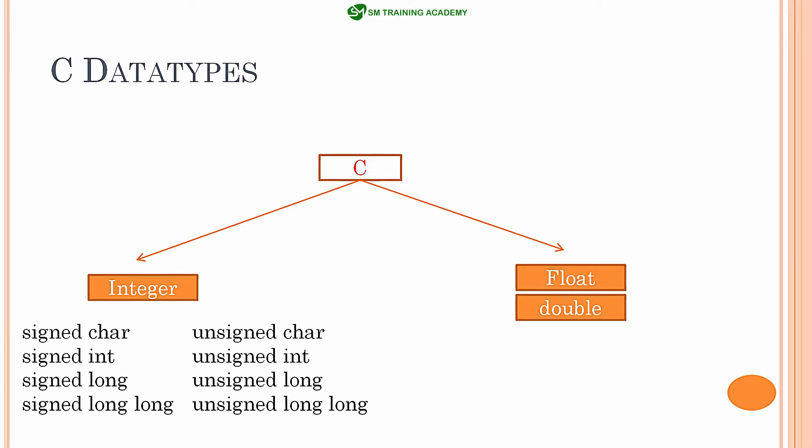The real number data types in C are float and double. If you want to work with decimal numbers, declare variables as float or double. For integer values, use char, int, long, or long long. You can choose between signed or unsigned — if you don't need negative numbers, declare the data type as unsigned; otherwise, leave it as the default signed type.